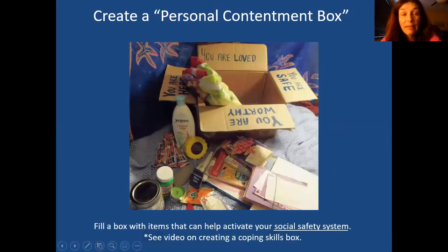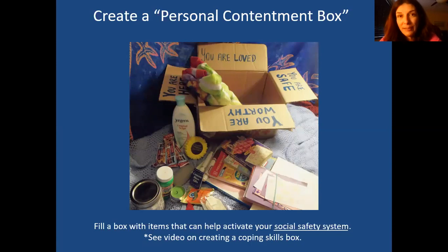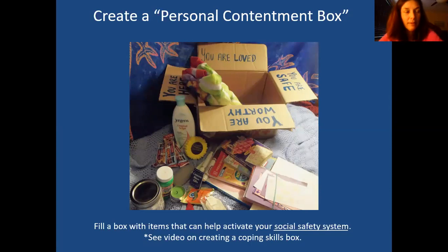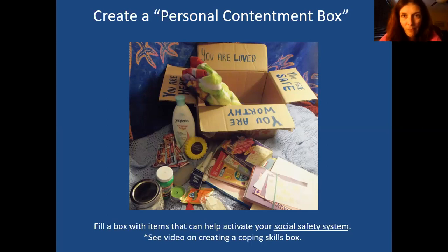Finally, they suggest creating a personal contentment box - getting a box together where you put all kinds of stuff that helps you create a sense of safety. It's all in one place, easy to find, maybe something you keep in your apartment or room. When you're feeling threatened or unsafe, you can look at it and interact with the items to help get that sense of safety. This is similar to what they call the coping skills box - I have a video about that if you want ideas on how to put together a box in general. So hopefully you got some good ideas about creating social safety - it might help you with social anxiety, with loneliness, with stuff like that. Try it out and I'll see you in the next video. Bye guys!